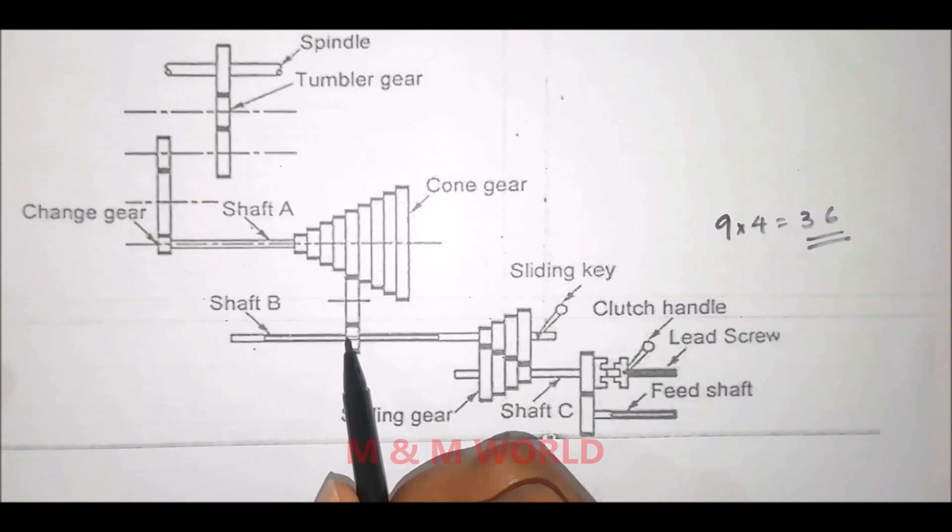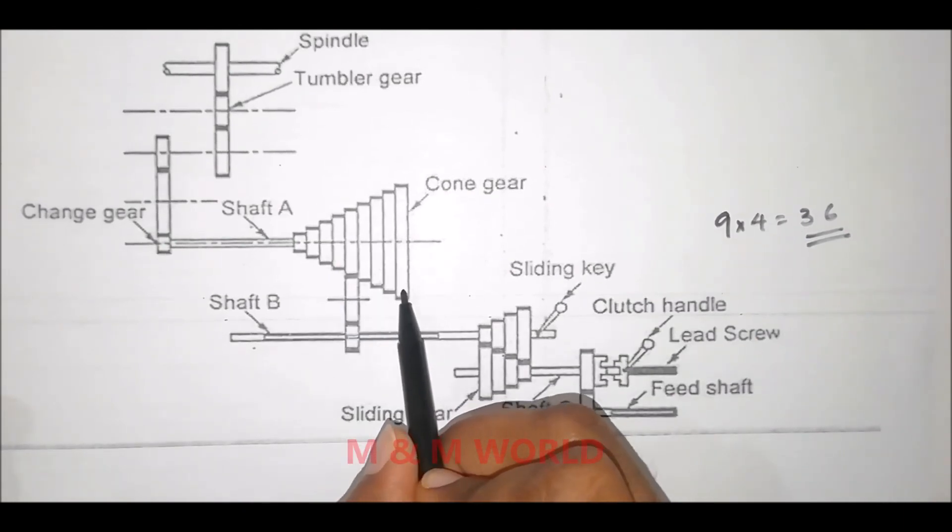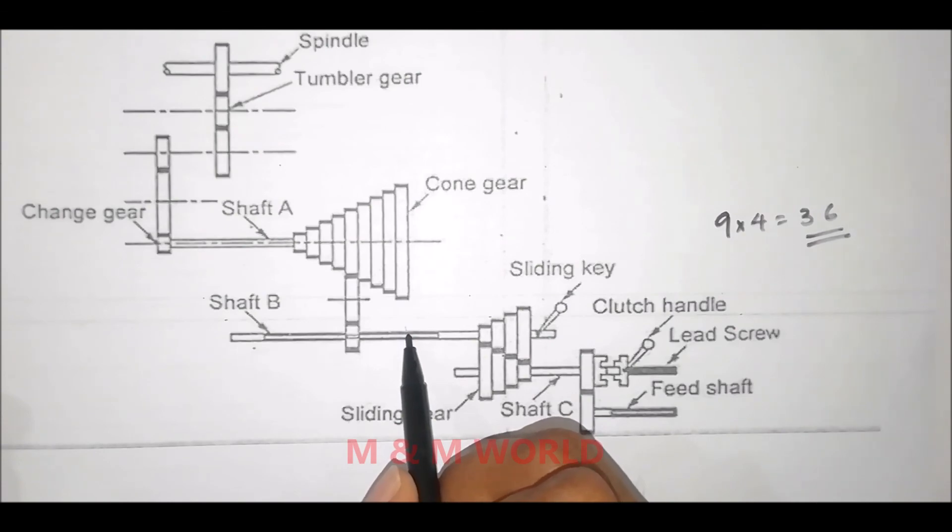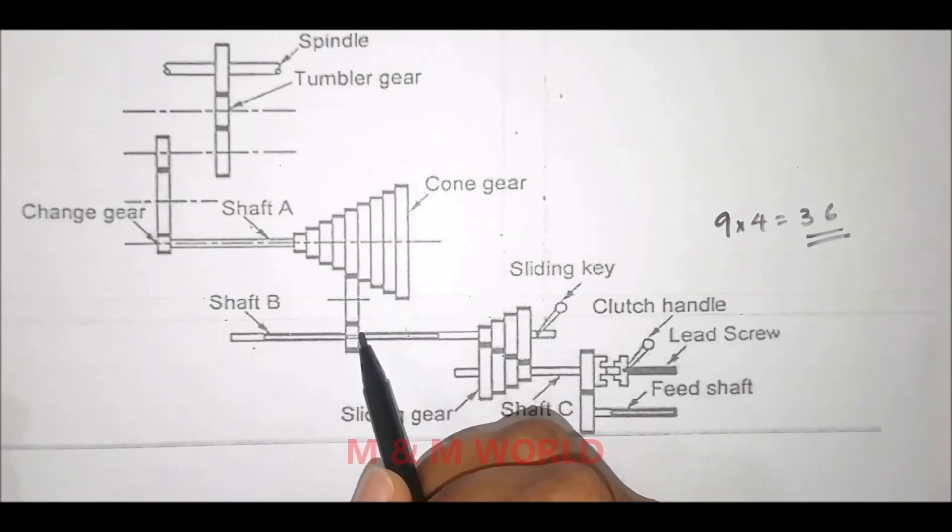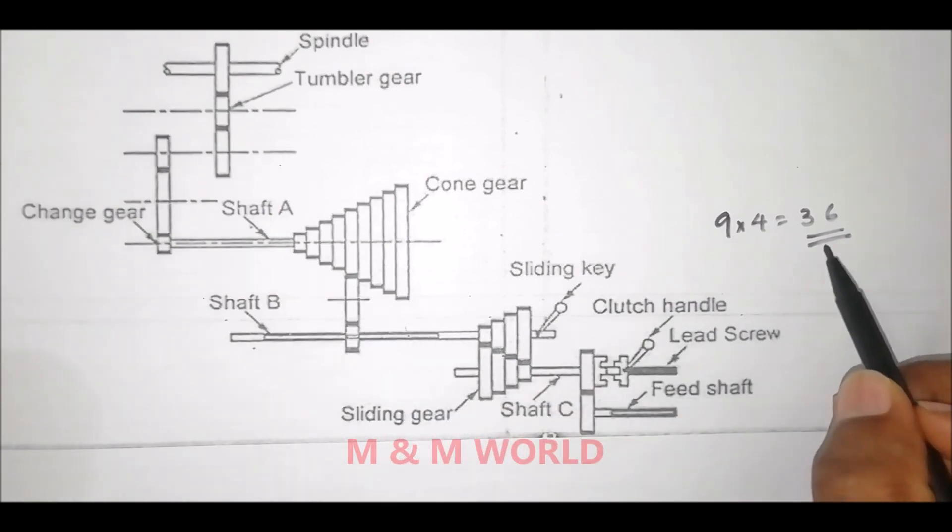This sliding gear, when engaged with one gear, gives a different speed. When engaged with another gear, you get a different speed. A total of 36 different speeds can be obtained from this arrangement.